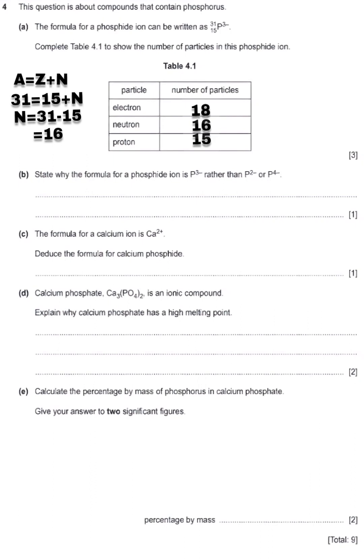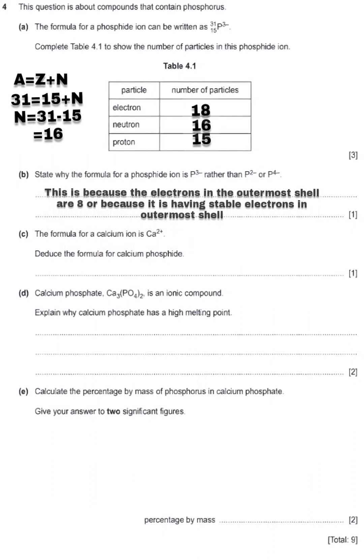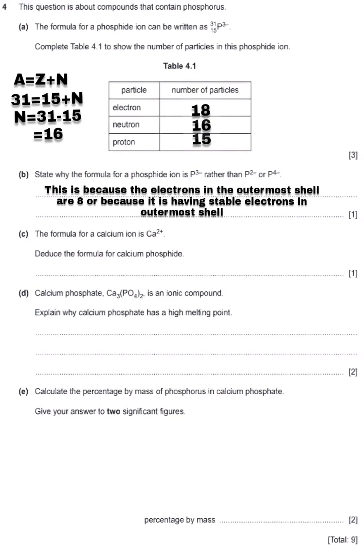If you consider P to the power 4 negative: taking 4 extra electrons gives only 1 electron in the outermost shell — not stable. But with P³⁻, the outermost shell is having 8 electrons, which means this one is stable. The electrons in the outermost shell are 8.